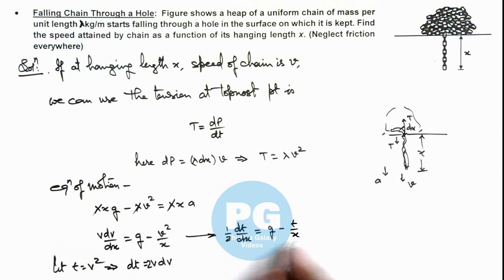We can rearrange these terms and rewrite as dt/dx plus 2/x multiplied by t equals 2g.